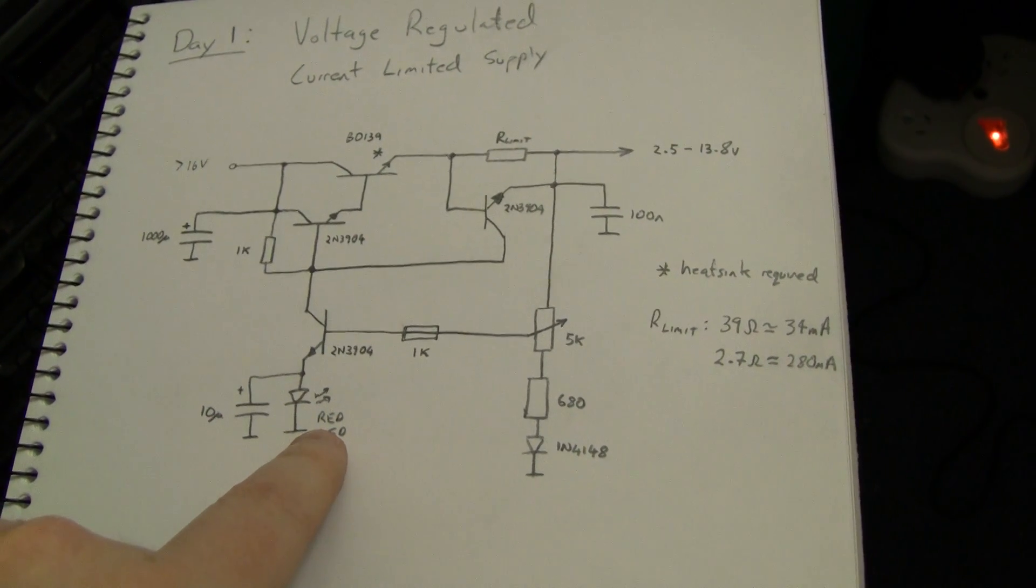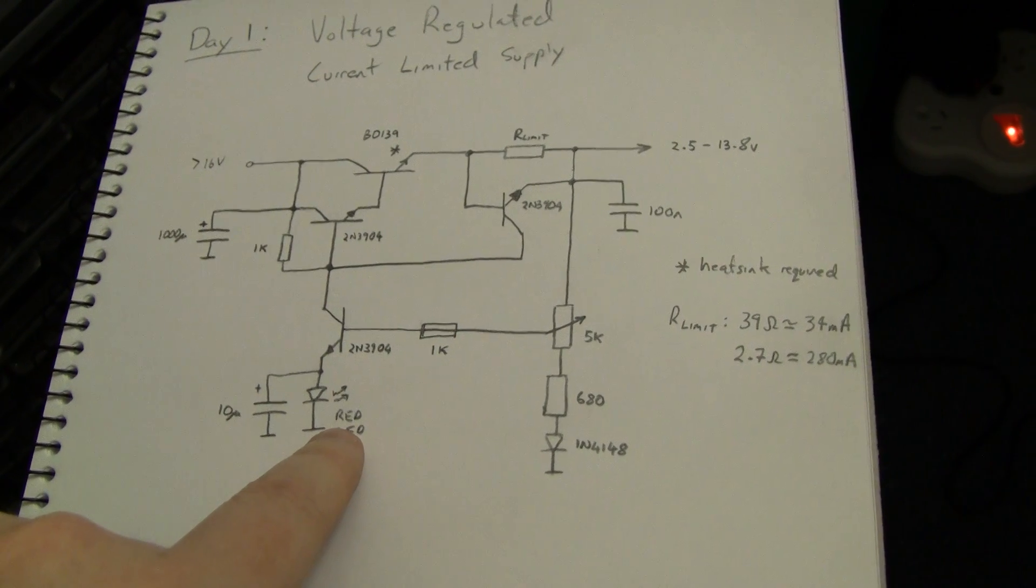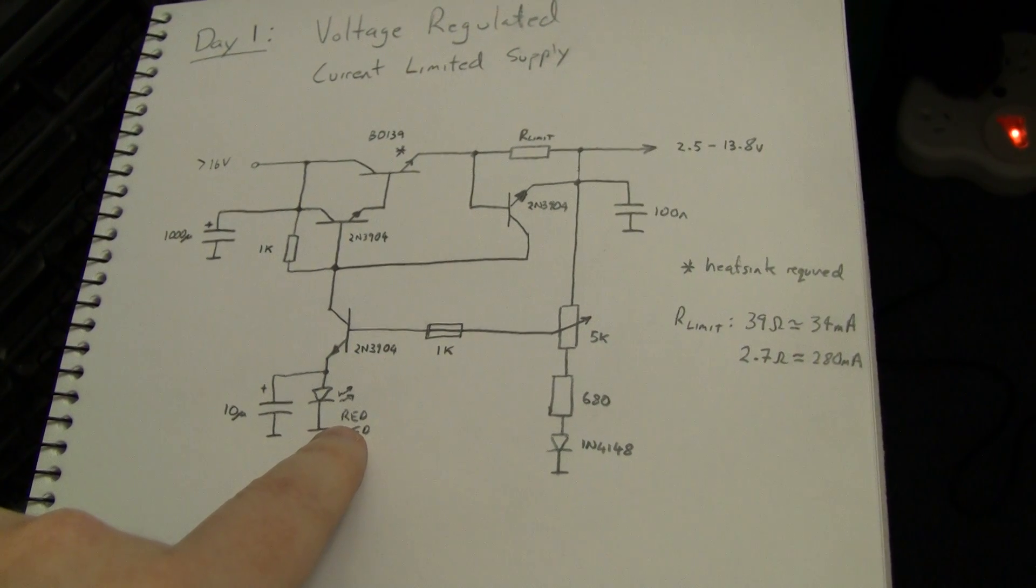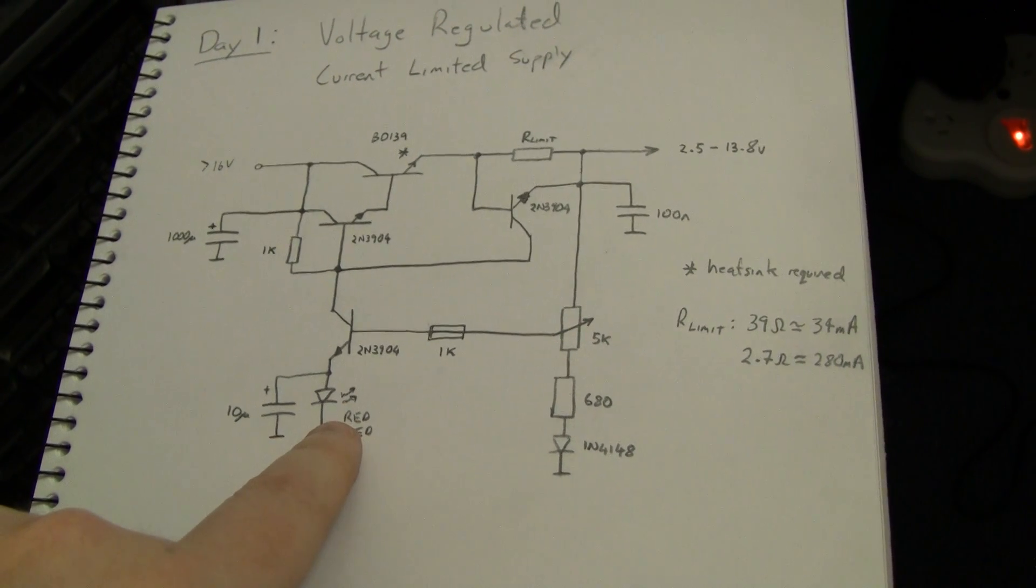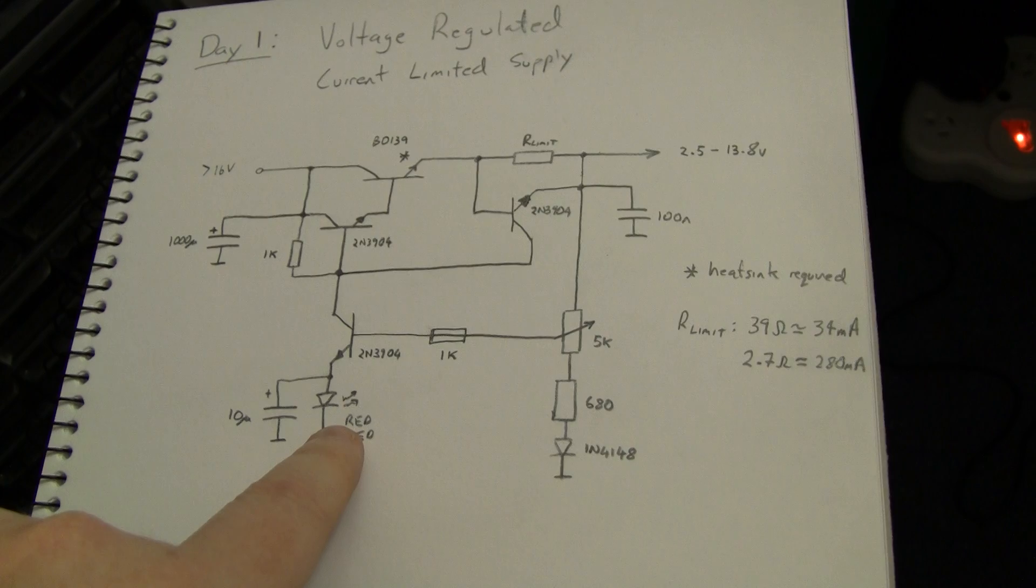Whenever it's on, the circuit is at least regulating. If it dims or goes out completely, then the circuit has lost regulation and it's either in current limit or the regulator itself is dropped out.